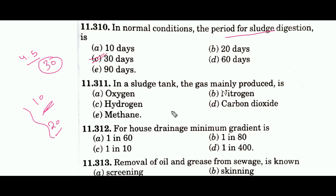Question 311 asks which gas is mainly produced in a sludge tank. The gases produced are methane, CO2, and other inert gases. The main gas is methane, so the answer is option E.